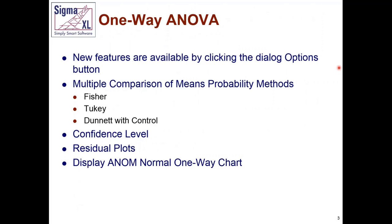Let's start with the one-way ANOVA. One of the things we tried to do as we progressed from version 7 to version 8 is to keep the dialogues uncluttered, and especially for trainers, to access the new features, they are accessible via the options button. So whether or not to introduce the new tools and features is optional, making it easier from a training perspective.